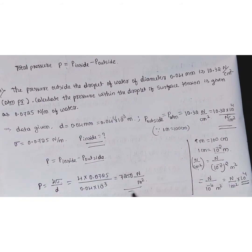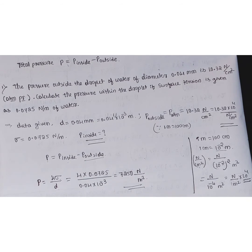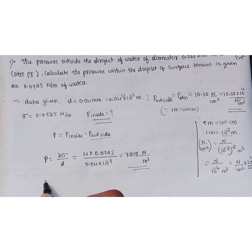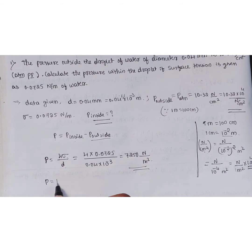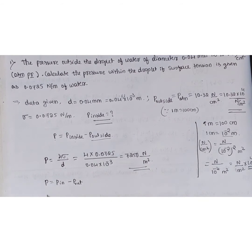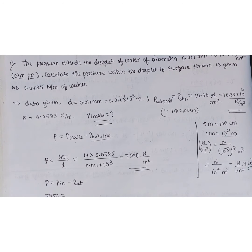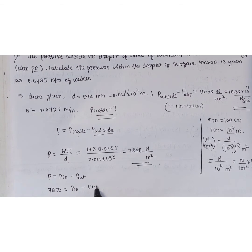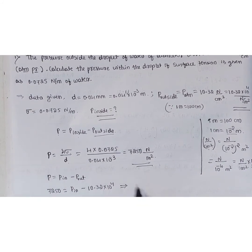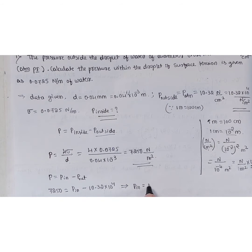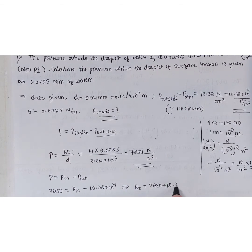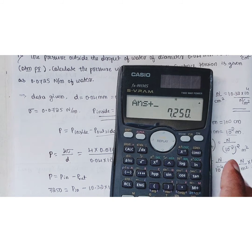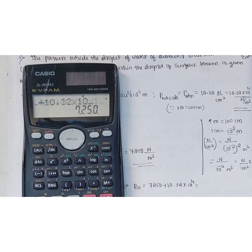Now we can calculate the pressure inside. From p = p_inside − p_outside: 7250 = p_inside − 10.32 × 10⁴. Therefore, p_inside = 7250 + 10.32 × 10⁴ N/m².